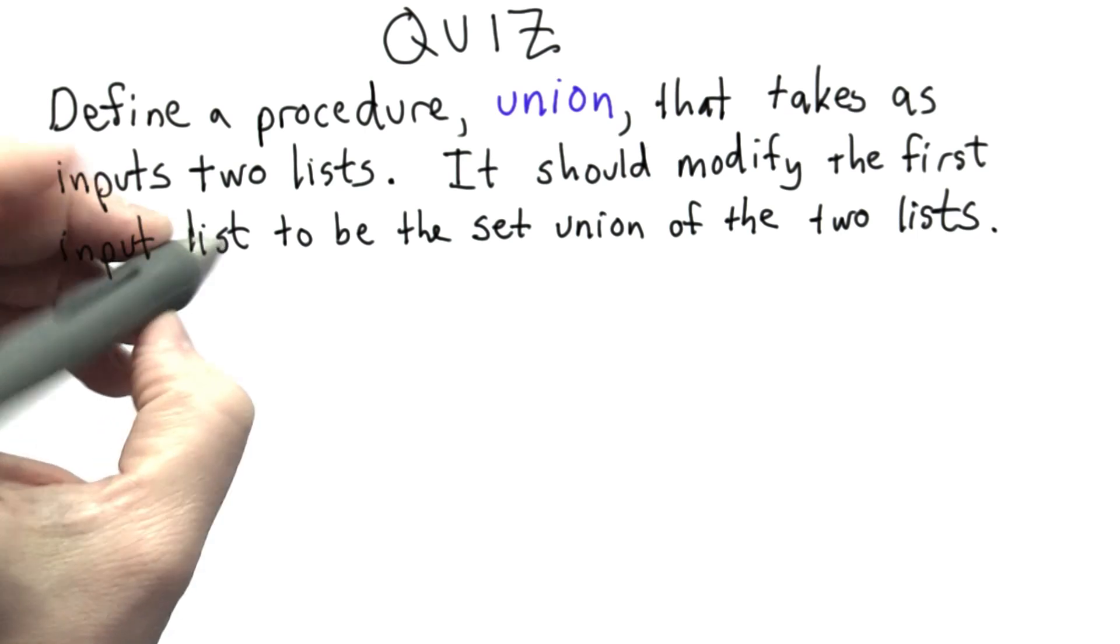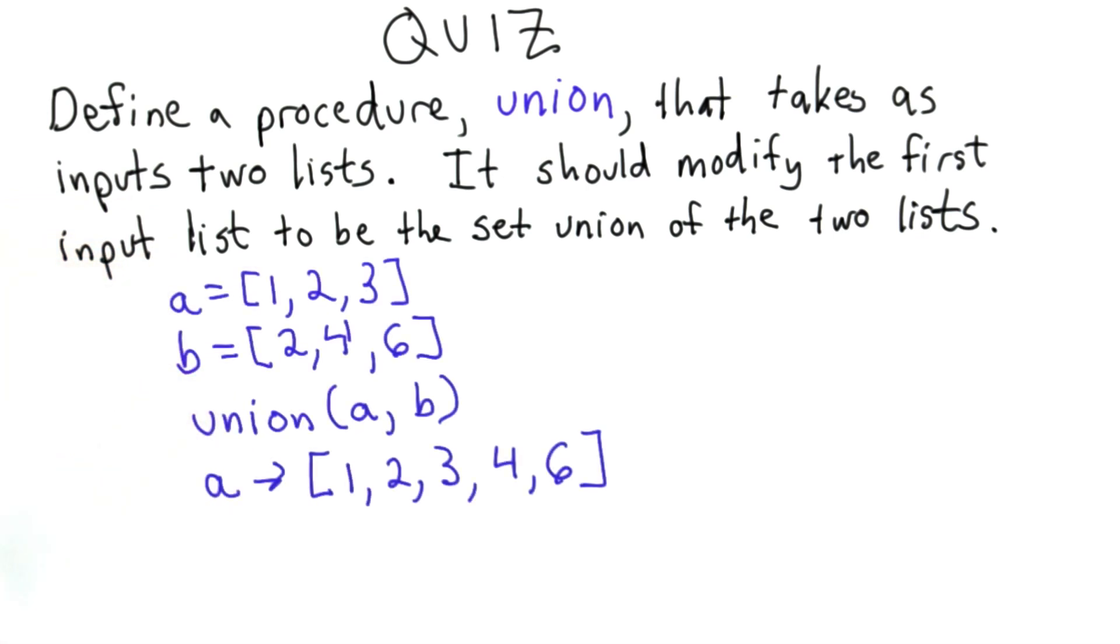So here are a few examples. If you start with the variable A referring to the list 1, 2, 3, and the variable B referring to the list 2, 4, 6, then we call union, passing in A and B.